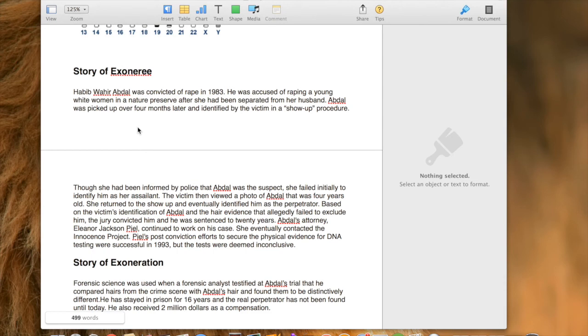Based on the victim's identification of Abdel and evidence that allegedly failed to exclude him, the jury convicted him and he was sentenced to 20 years. Abdel's attorney Elano Jackson Peel continued to work on his case. She eventually contacted the Innocence Project. Peel's post-conviction efforts to secure the physical evidence for DNA testing was successful in 1993 but the tests were deemed inconclusive.